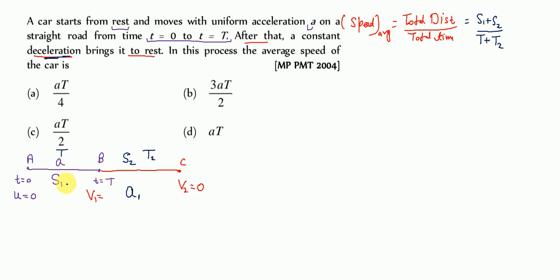So the average speed is S1 plus S2 upon T plus T2. The final velocity at B (end of first phase) becomes the initial velocity U2 for the second phase B to C. So V1 equals U2. This is the basic concept — now let's find S1 and S2.